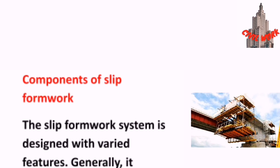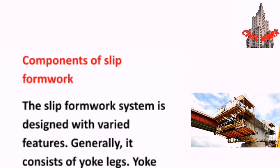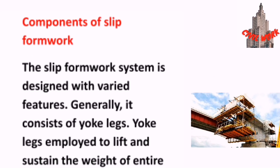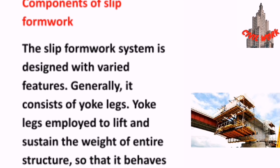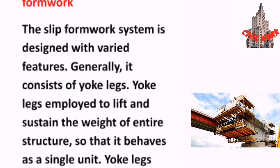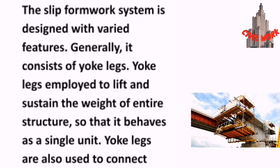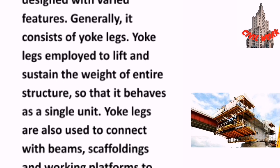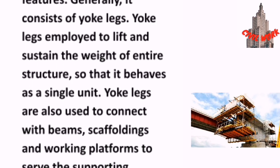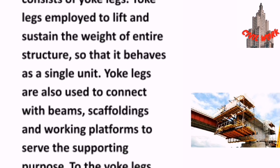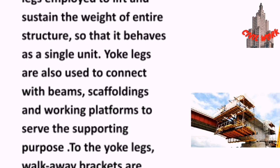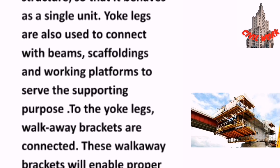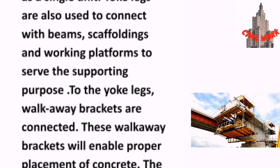Components of slip formwork: The slip formwork system is designed with varied features. Generally, it consists of yoke legs, which are employed to lift and sustain the weight of the entire structure so that it behaves as a single unit. Yoke legs are also used to connect with beams, scaffold holdings, and working platforms to serve the supporting purpose.